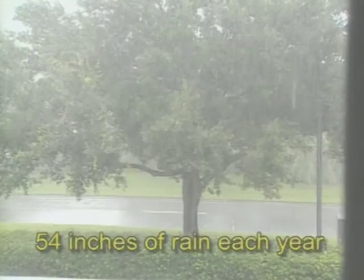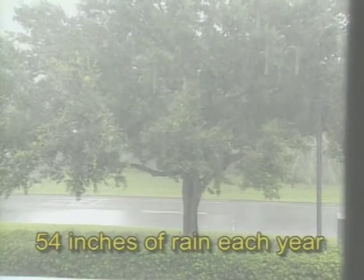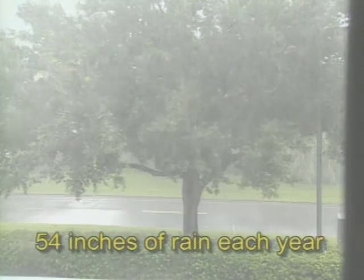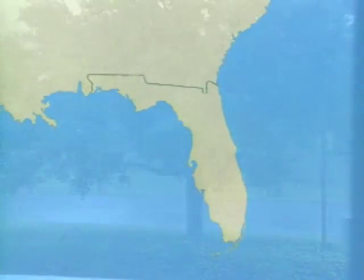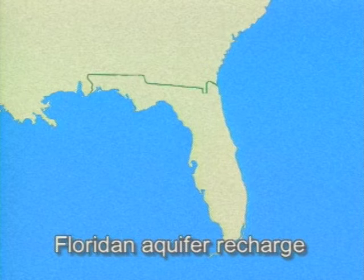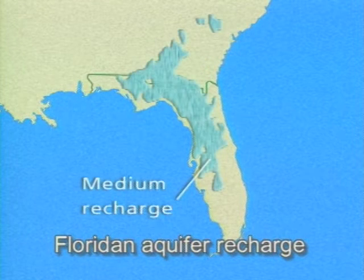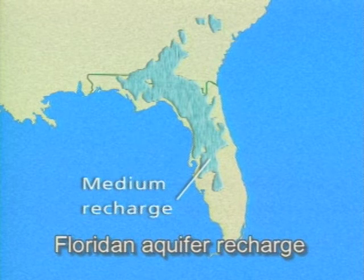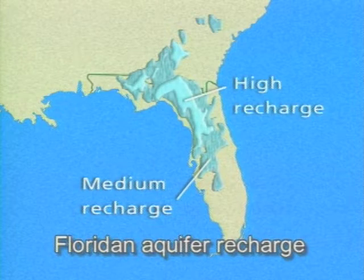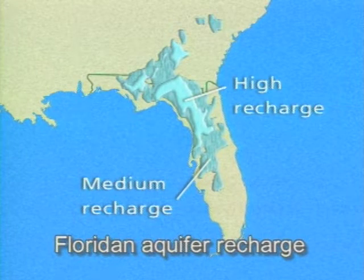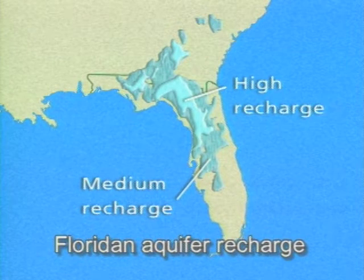Most of Florida gets an average of 54 inches of rain each year. In some areas of Florida, the geology allows that rain to seep down into the aquifer. This process of replenishing the water in our aquifers is called aquifer recharge.